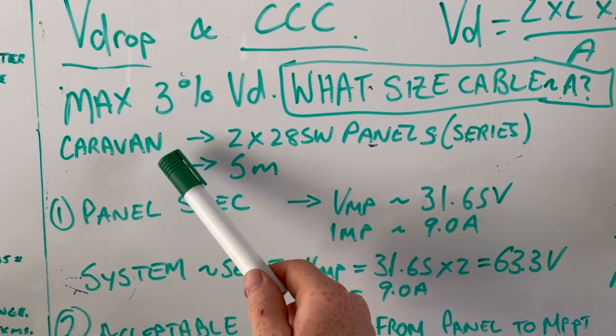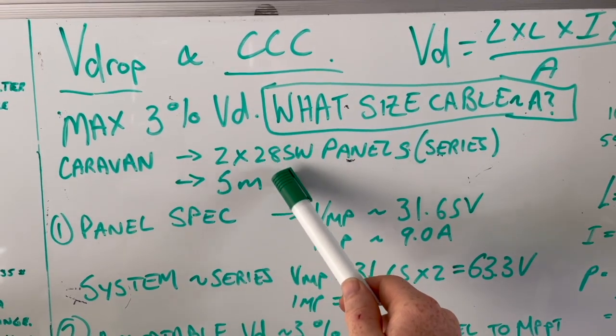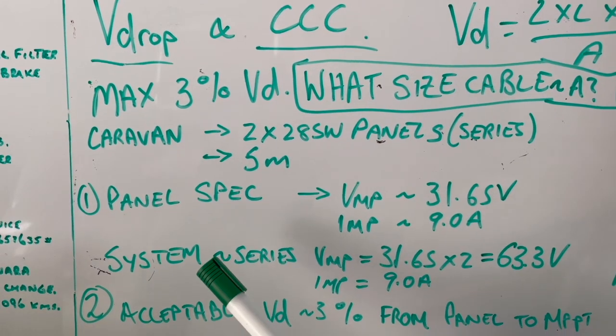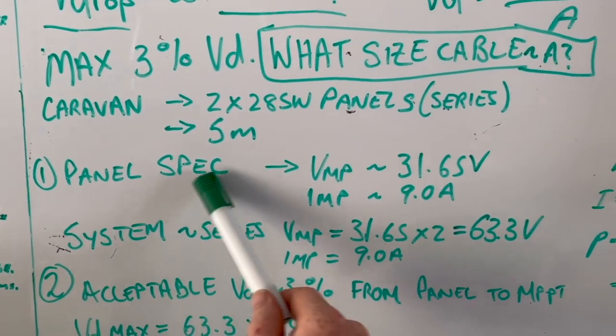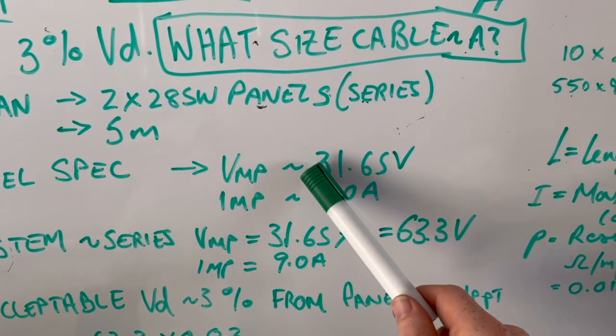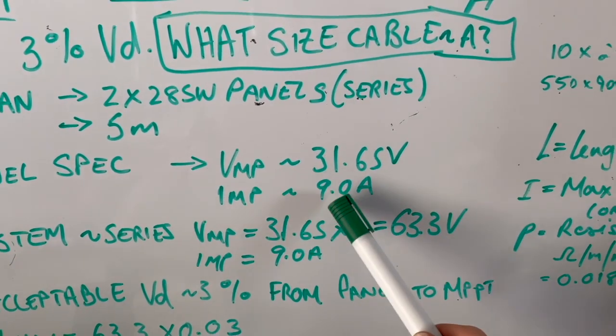The scenario is we've got a caravan with 2 times 285 watt panels. They're in series, and the length is 5 meters. First job you do, grab your panel specifications. From the back of the solar panel we've got a VMP of 31.65 volts and an IMP of 9 amp.